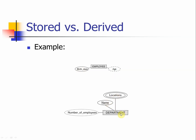Another example is department: because we will have a relationship between employee and department indicating which department each employee works for, we can therefore derive the number of employees for the department as a derived attribute.